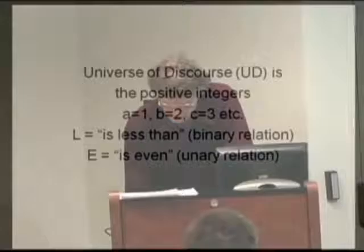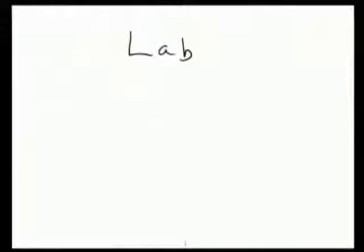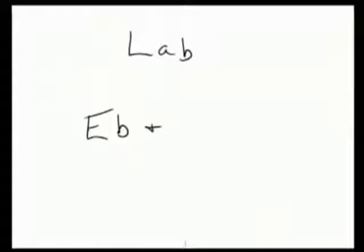Using those symbols, LAB would mean A is less than B. If I wanted to write 'two is even while one is not,' I use the first 26 letters of the alphabet for the first 26 numbers. So I'd write 'two is even while one isn't' using that notation — clear enough.